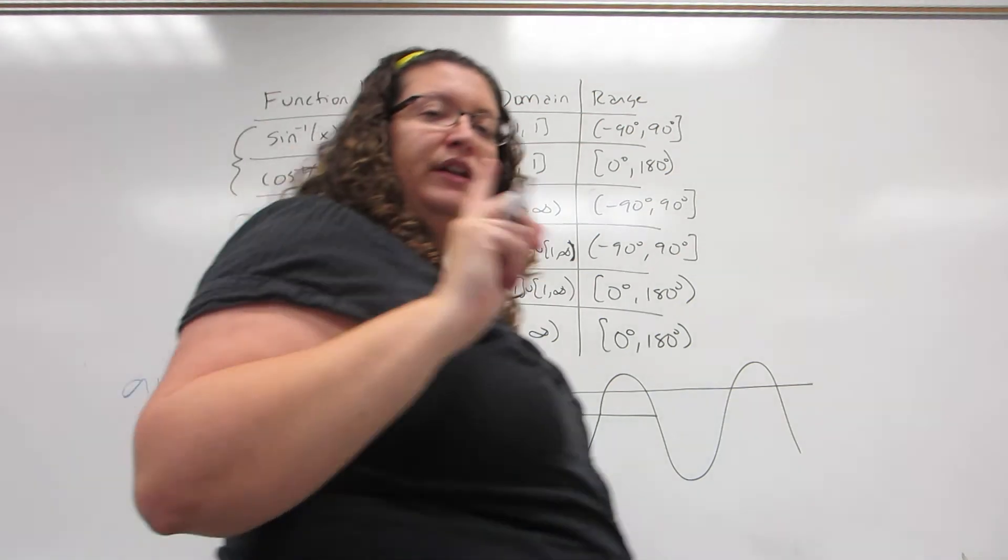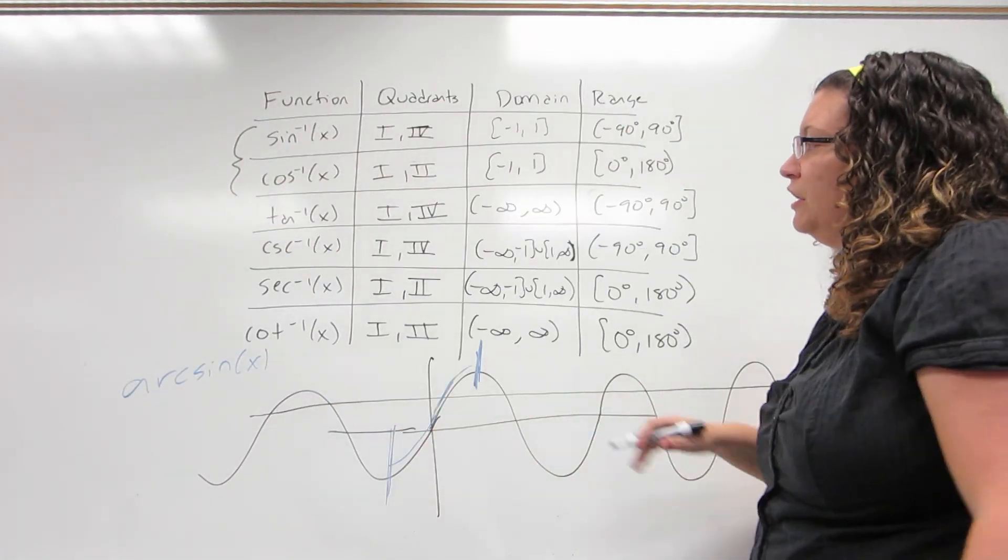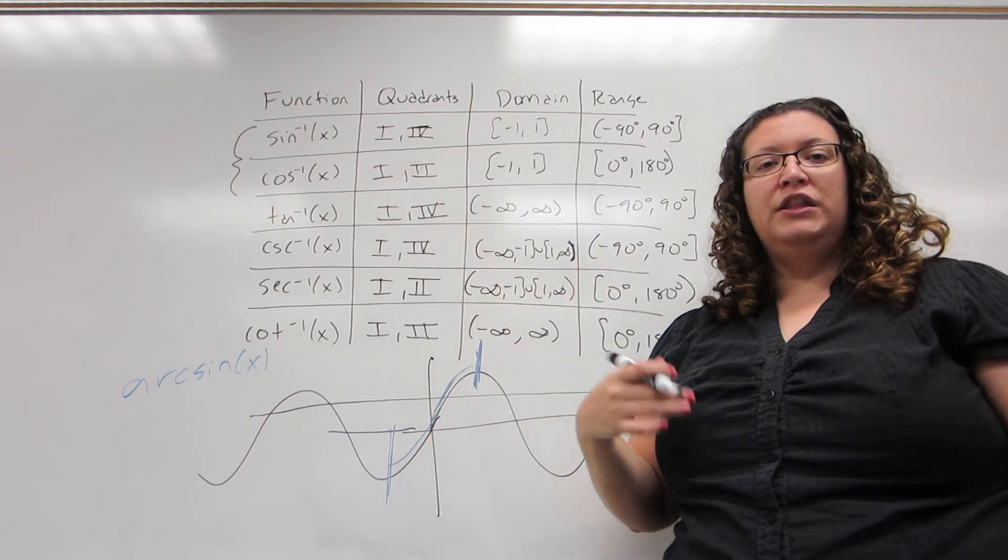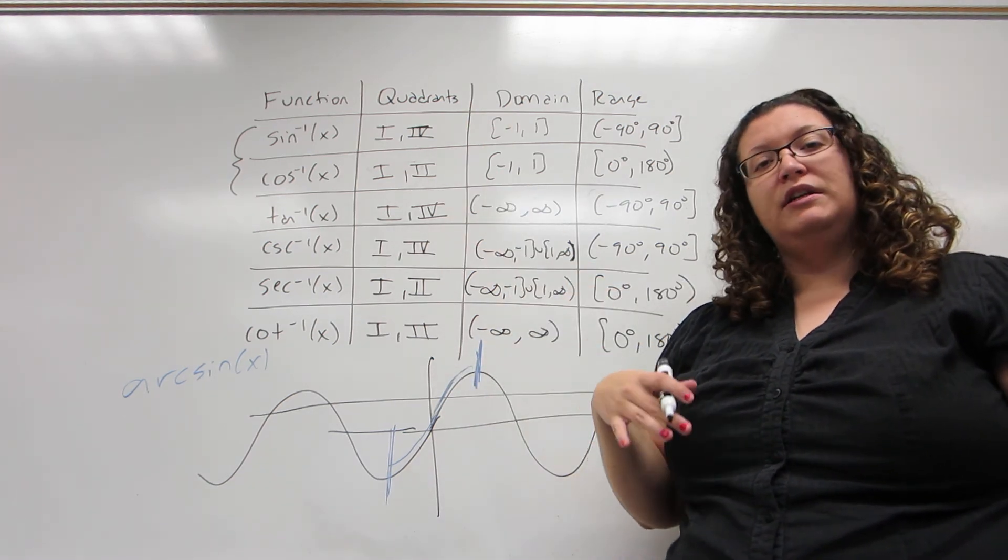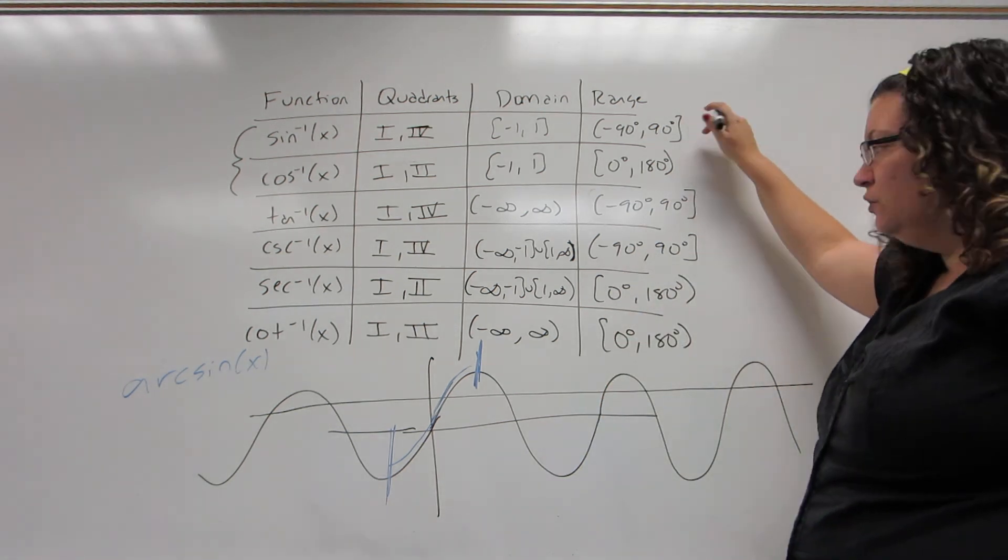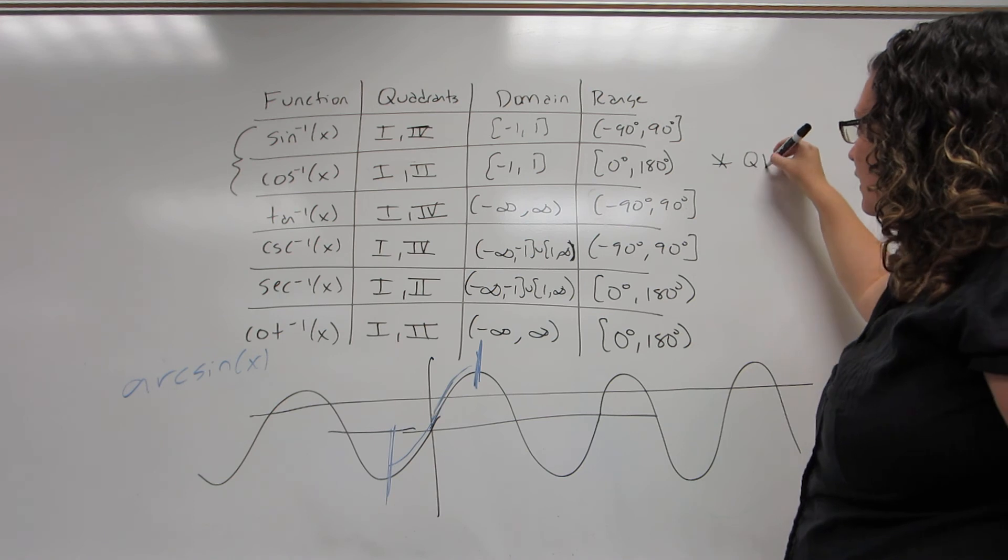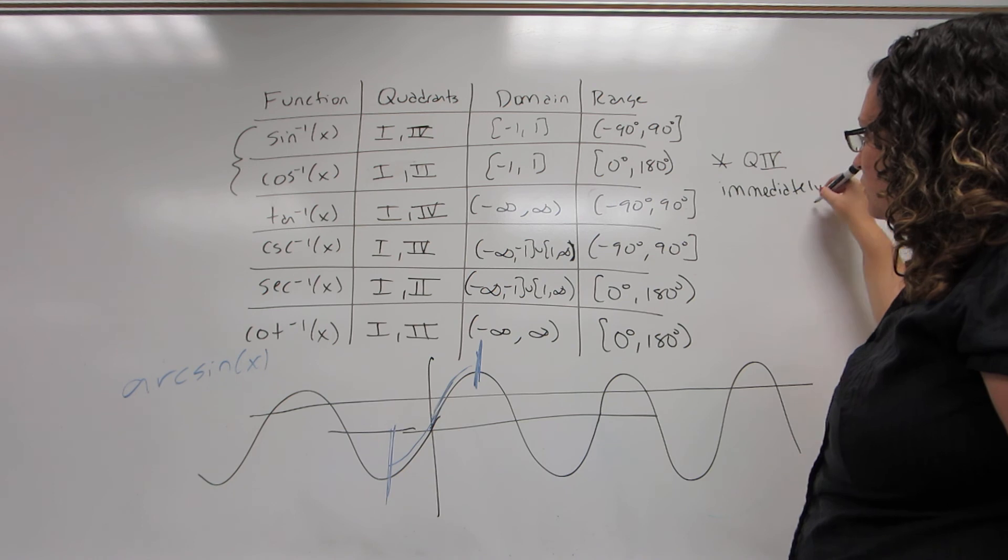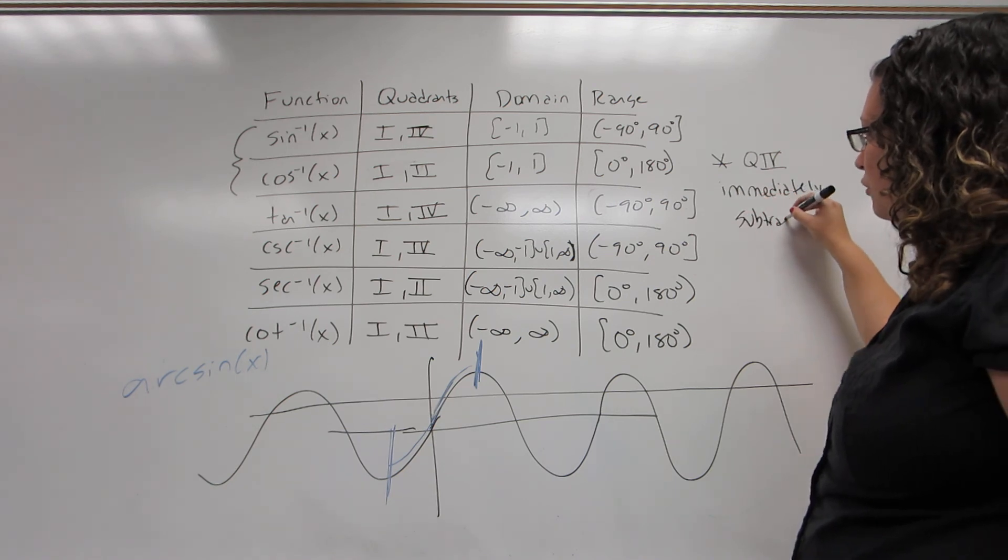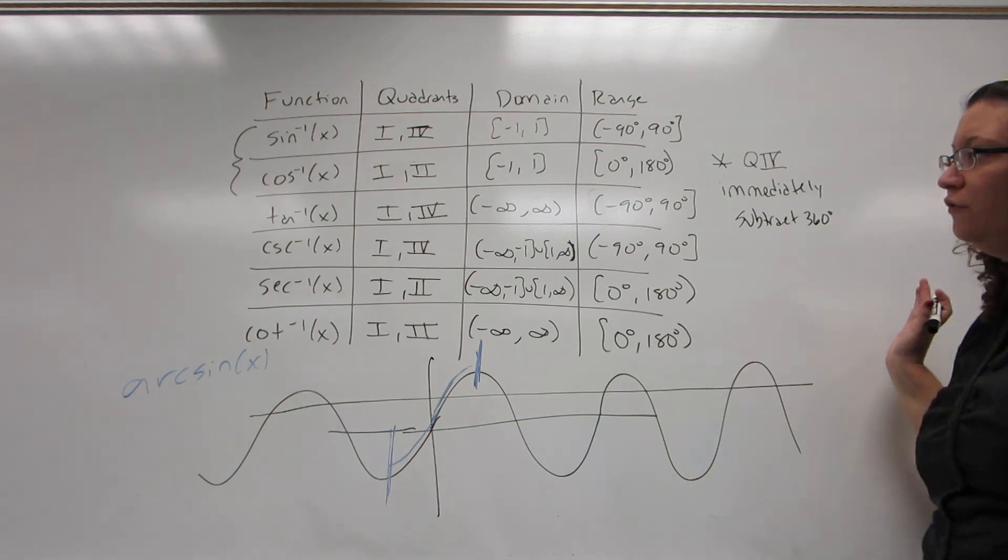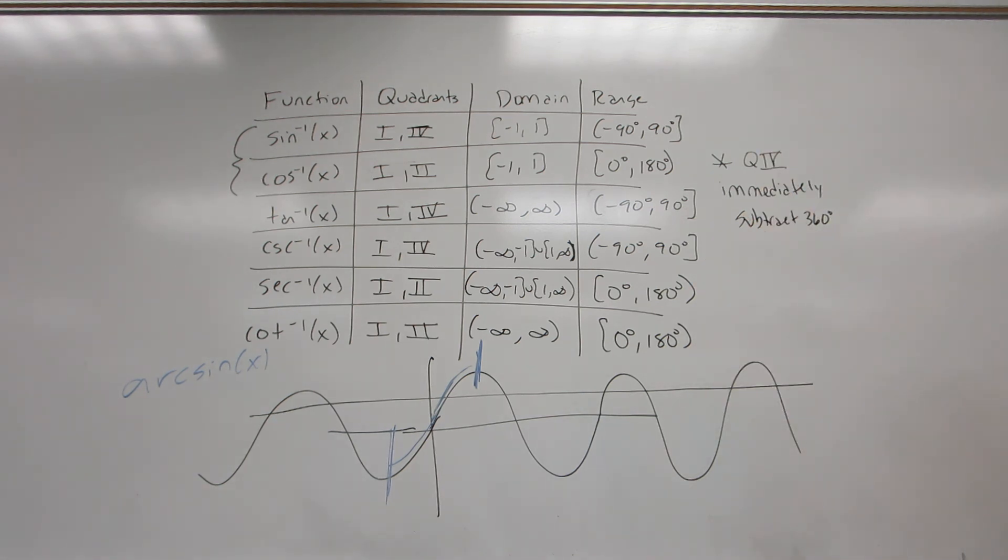Now, there's just one caveat when we do these. Thinking of these as quadrants, normally when I think of quadrant 4, I think of it as the angles 270 to 360. But those angles aren't in the actual range. So the caveat is, when you land in quadrant 4, you will immediately subtract 360 degrees. Now, of course, I could have also done this entire table in radians, and everything would translate the same.